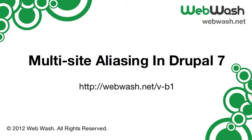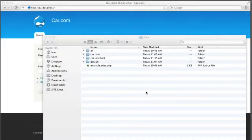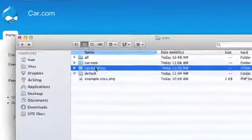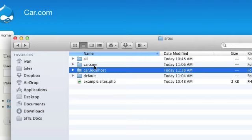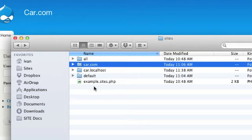Hello and welcome to a quick screencast on creating multi-site aliases. For a detailed tutorial on creating multi-site aliases, go to the link below. Let's create multi-site aliases so that car.com and car.localhost use the single sites directory called car.com.